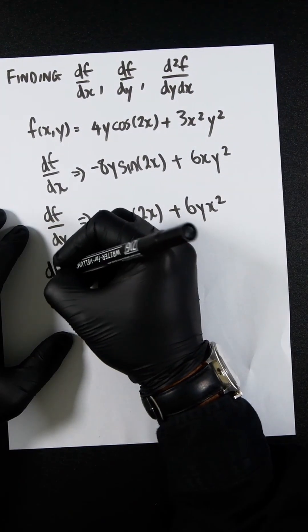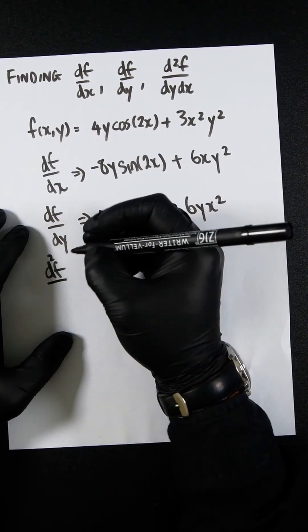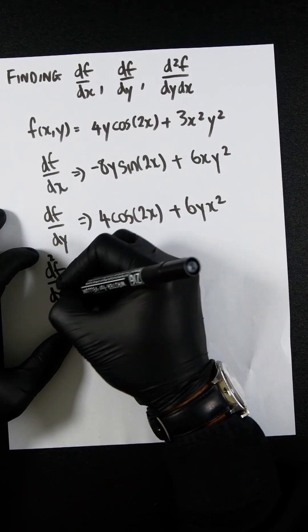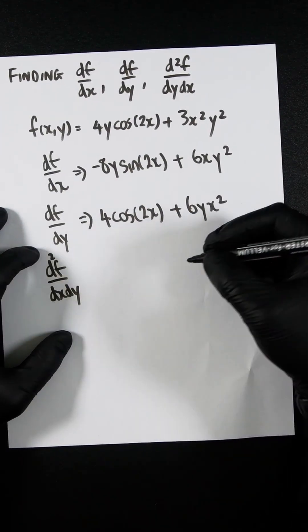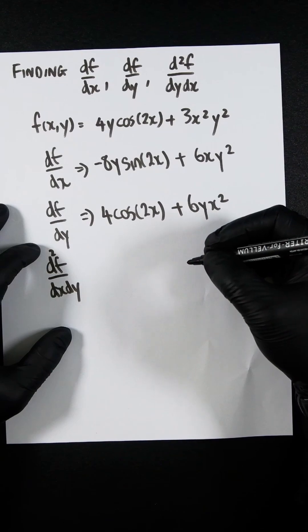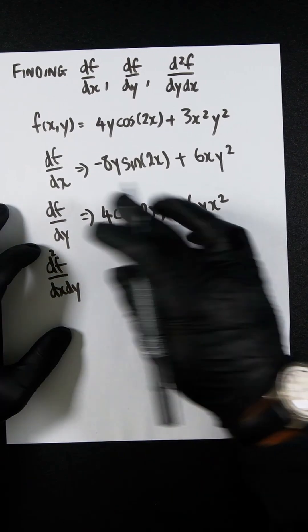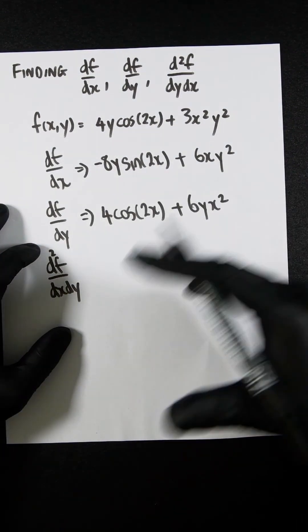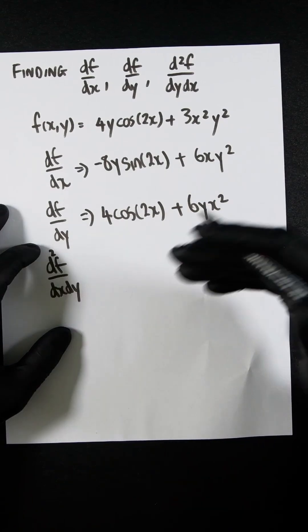If we wanted to find out what d²f/dxdy was, we would simply differentiate df/dx again, but in terms of y.